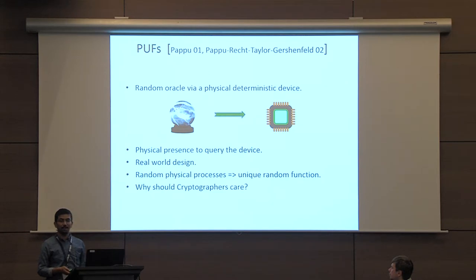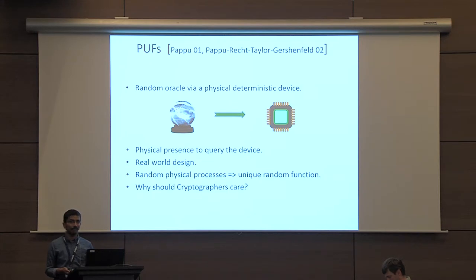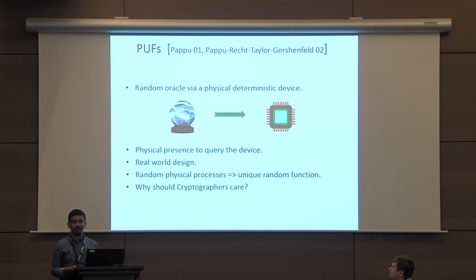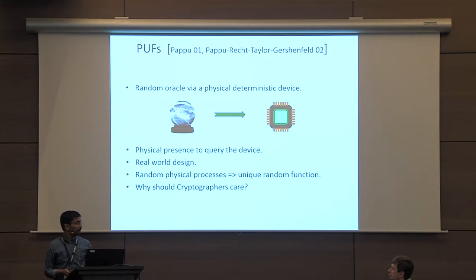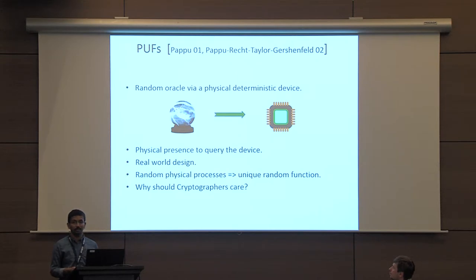Why should we as cryptographers care about these objects? Firstly, we know that the random oracle model has given rise to numerous applications and interesting results over the last couple of decades. So if you have something that is a physical manifestation of a random oracle, perhaps we can achieve new things in cryptography. Also, PUFs are gaining a lot of popularity in several other fields, and perhaps we can leverage that to get very efficient protocols in the real world.